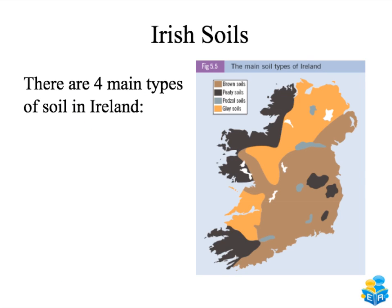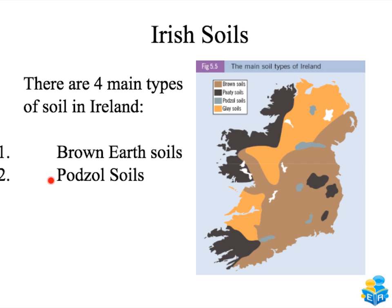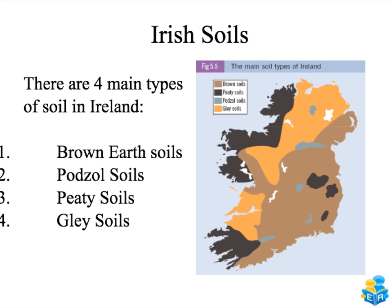In Ireland we have four main types of soil: brown earth soils, which are the best soils and make up most of Ireland; podzol soils, found in small areas; peaty soils found along the west and south west; and gley soils.